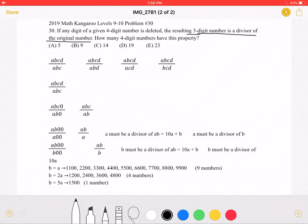Therefore, ABCD divided by ABC will result in a positive integer. And ABCD is also divisible by ABD, by ACD, and by BCD.